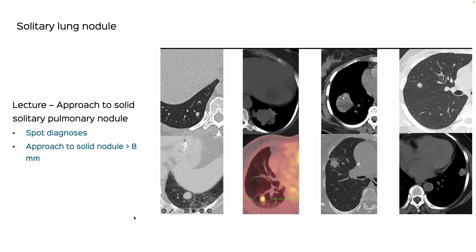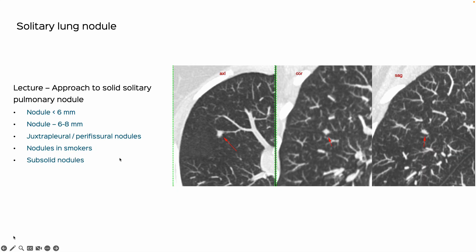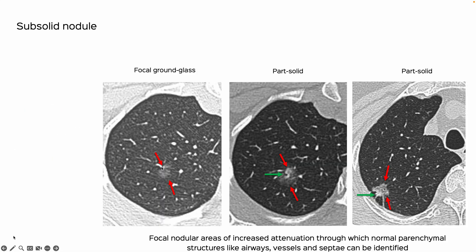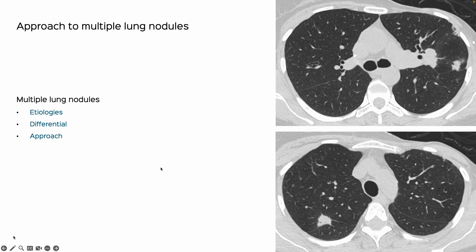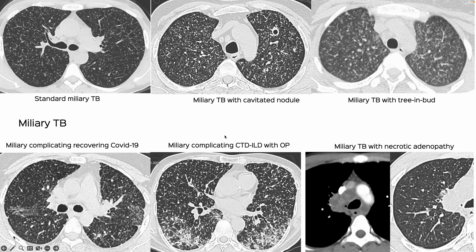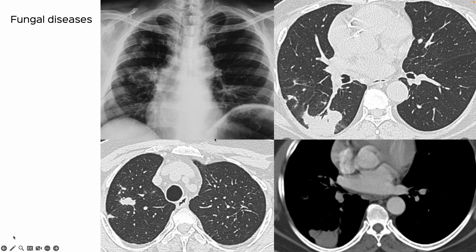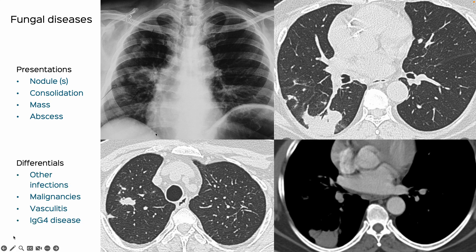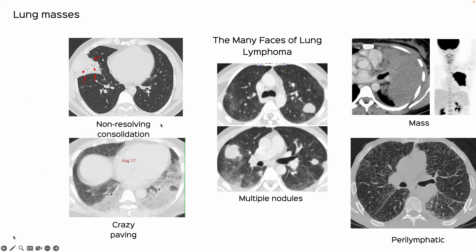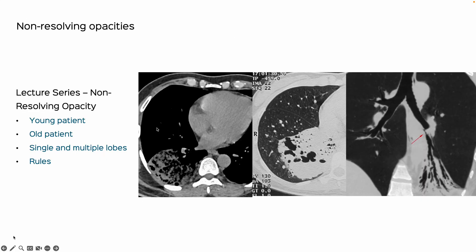Here's a preview of the topics. We'll look at the solitary pulmonary nodule, nodules greater than eight millimeters, smaller nodules, juxtapleural peripheral nodules, subsolid nodules as a separate topic, and multiple lung nodules and how to approach them. Week five will be tuberculosis — all forms of TB. Next will be fungal diseases, including different manifestations and ABPA. We'll also look at lung masses, which could include tumors, sequestration, lipoid pneumonias, and more.